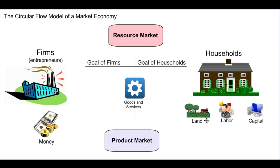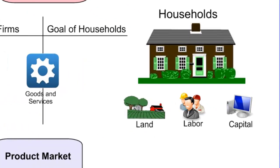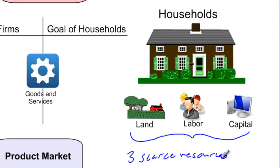Let's start with some definitions. On the household side of our graph, households possess three scarce resources. Something is scarce when it is both desired and limited in supply. Land, labor, and capital all exist in finite amounts. Land resources are those used to grow crops, mine minerals, catch fish, and log forests — these are the natural resources used to produce goods and services.